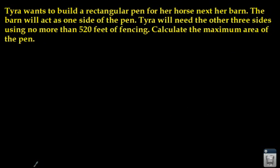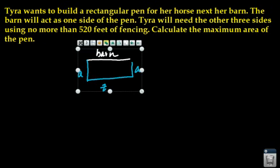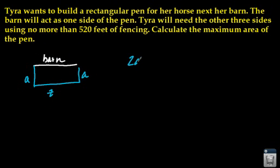Let's do another one where we're asked to find the maximum and minimum. It says Tyra wants to build a rectangular pen for her horse next to her barn. The barn will act as one side of the pen. Tyra will need to build the other three sides using no more than 520 feet of fencing. Calculate the maximum area of the pen. I'm going to just draw this. If we have the barn, let's say this is the barn side, and that means we're going to make some sort of rectangle here. We could call this a and z.